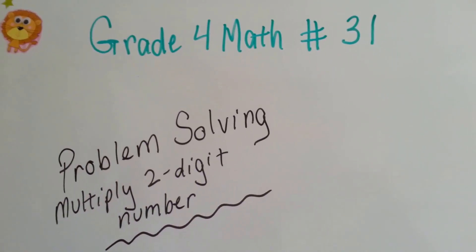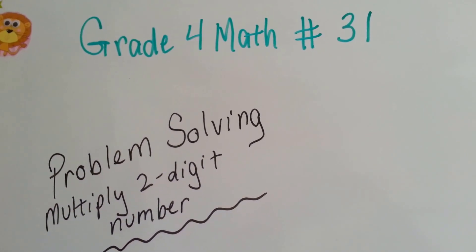Grade 4 math number 31, Problem Solving to Multiply Two-Digit Numbers.